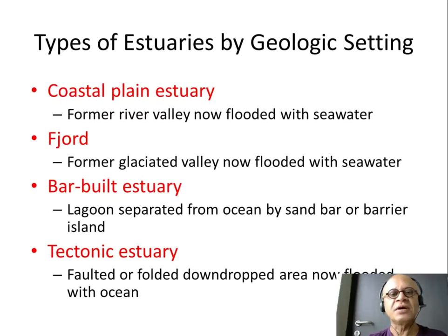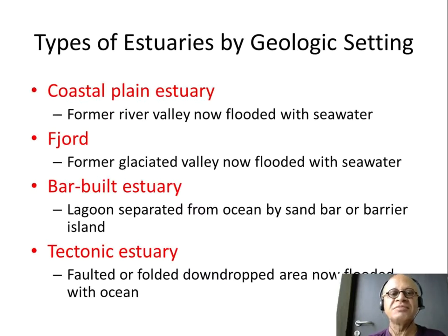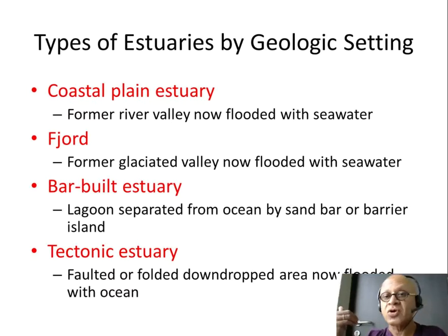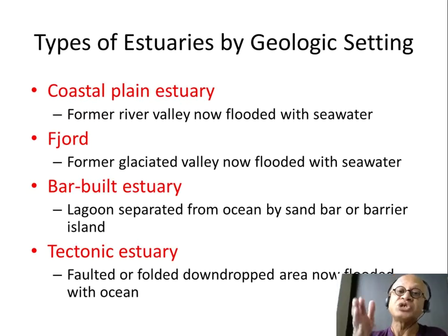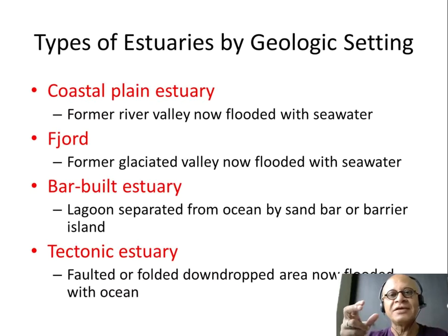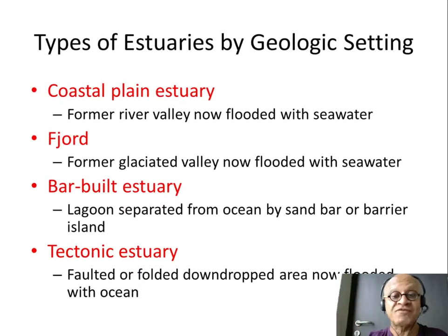You end up with these morphologies like coastal plain estuaries — better to look at the images we will see later. Fjords are glaciated valleys carved in a U shape; the glacier melts and the ocean inundates, giving you a fjord. Bar-built estuaries are depositional features along a depositional coast. And tectonic estuaries are where plates create an estuary — the San Francisco Bay is a tectonic estuary, for example.